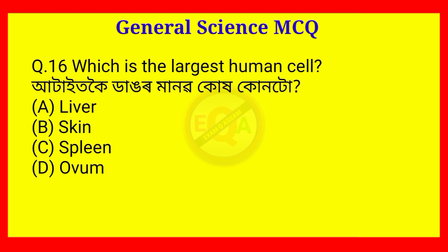Question number 16. Who is the largest human cell? The answer is Option D — Ovum.